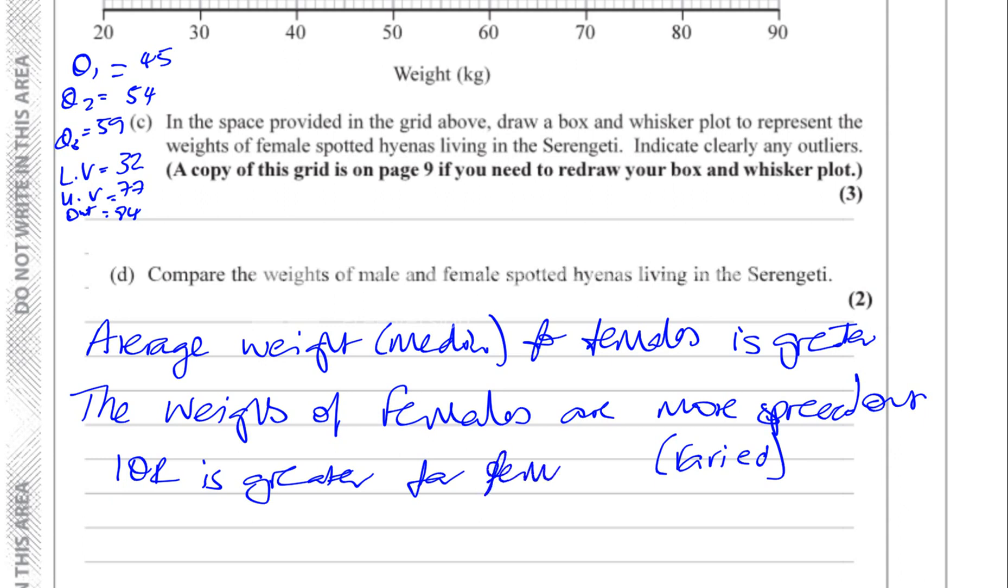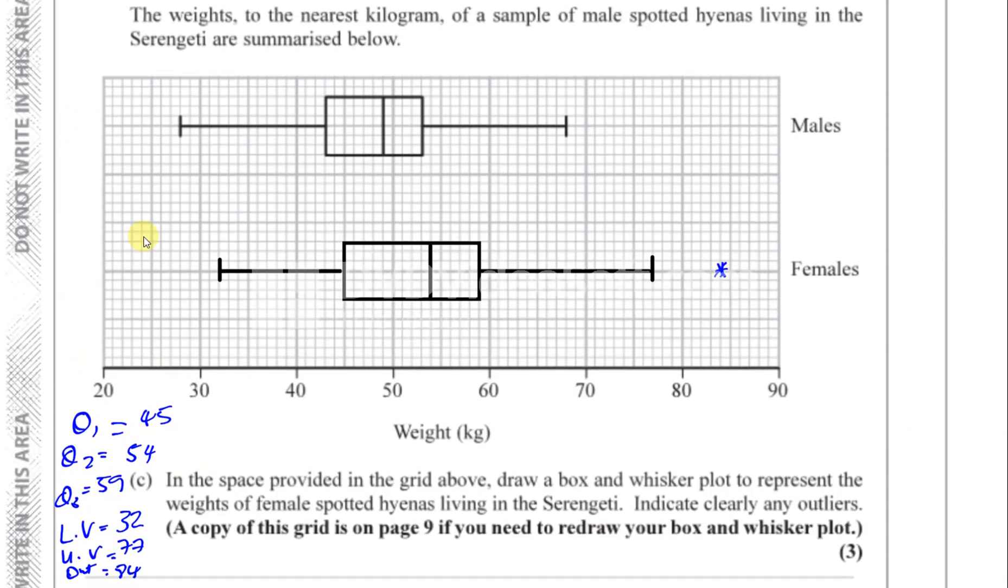Why? Because the interquartile range is greater for the females. You can see the Q3 minus Q1 is greater. Okay. Those are the two main points here. They want two points here. Those are the two points you can talk about. The interquartile range and the median. Here you can see the interquartile range is wider. This goes from 45 to 59. This one goes from 43 to 54. So it's like short, it's less range than males. Females have a wider range of weights because the interquartile range is bigger. And their average is, the average weight, the median is greater for the females. So that's what they're looking for in this question.